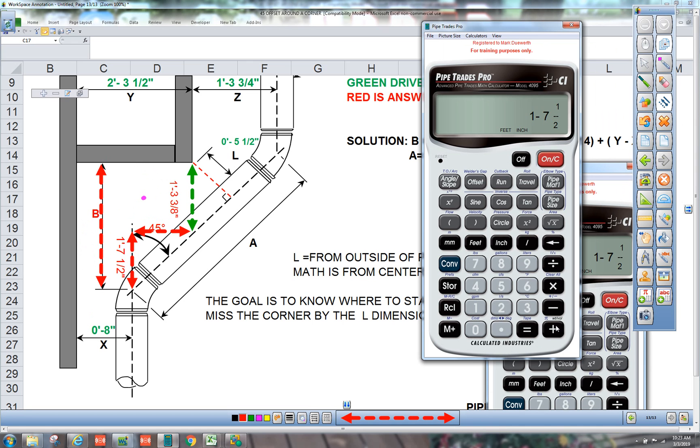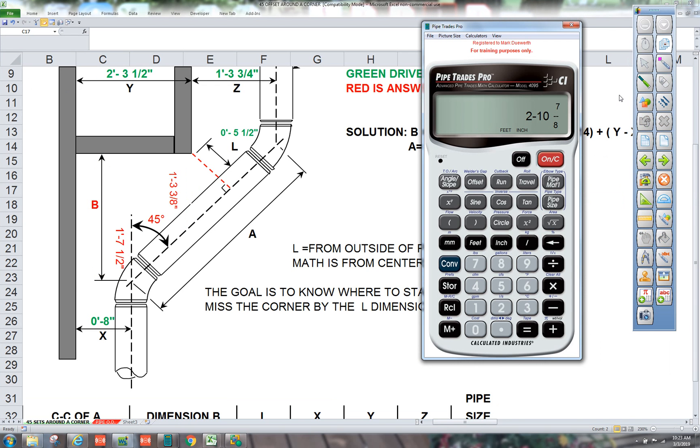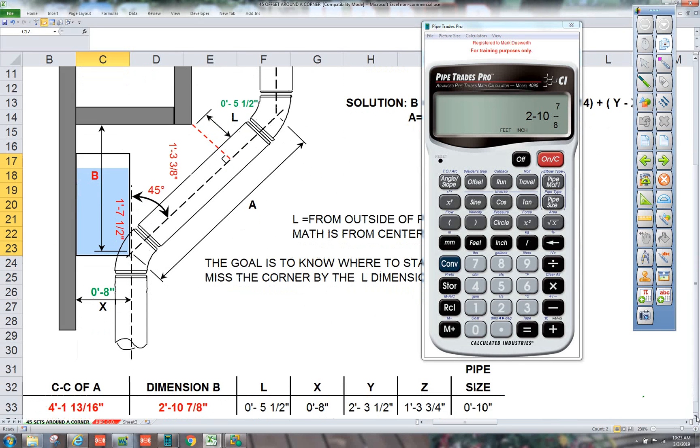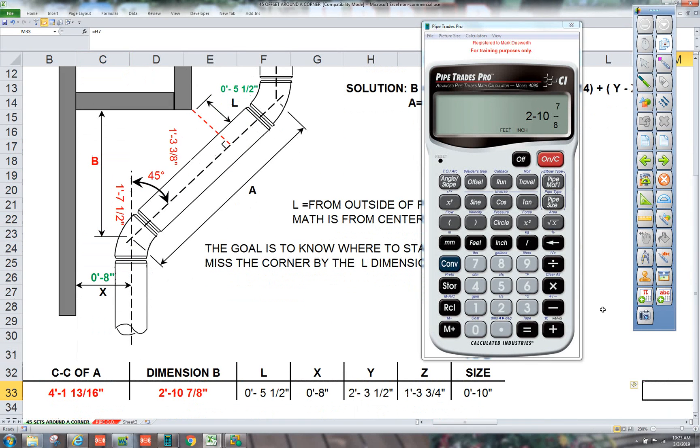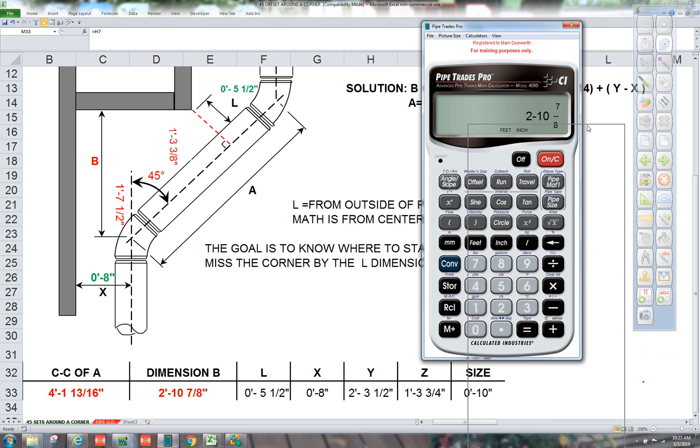One foot seven and a half plus one foot three inch three eighths. You can see in our answer sheet, dimension B is two foot ten and seven eighths. That's where we start the 45. So what drives the problem is the pipe size, the distance from the outcropping. And then just plug in the numbers here.